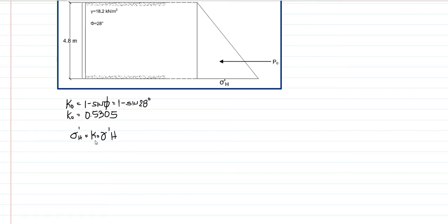So our gamma prime, since there's no water, automatically our effective unit weight will be the given unit weight. So that will just be equivalent to a value 0.5305 times 18.2 times 4.8.